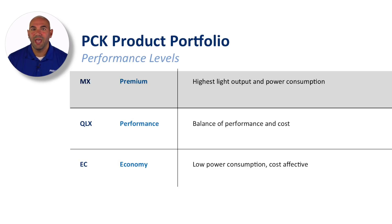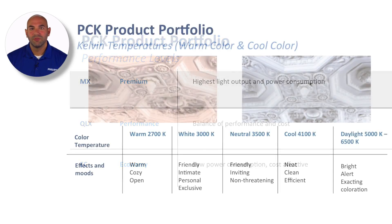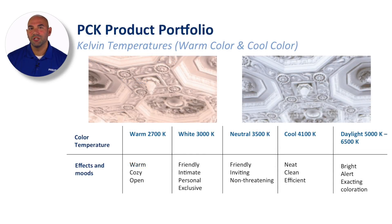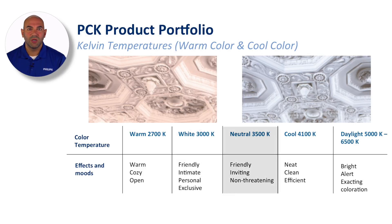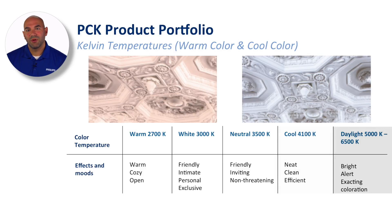For white light, color temperature is referred to by degrees Kelvin, or K. Warm color temperatures like 2700K are often cozy or open. 3000K is friendly or intimate. 3500K is inviting or non-threatening. 4100K is neat and clean. And the daylight range of 5000K to 6500K is bright, alert, and exciting.